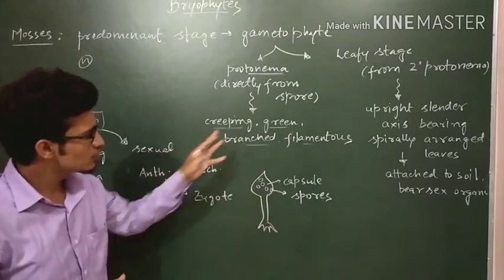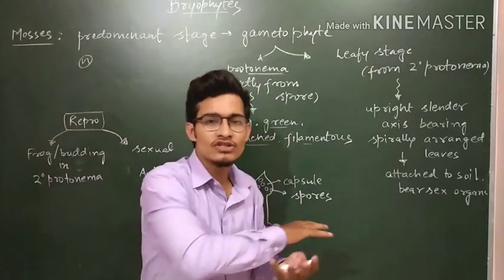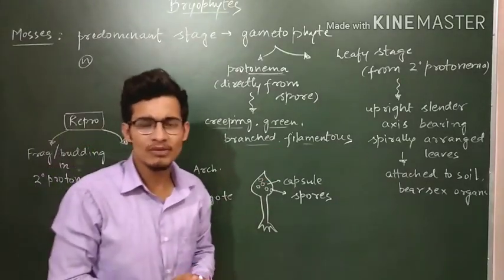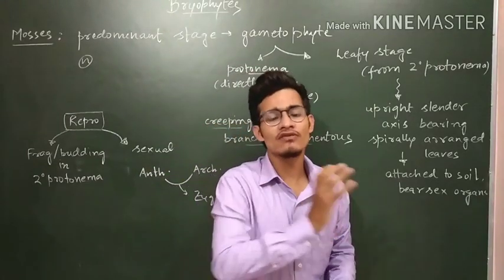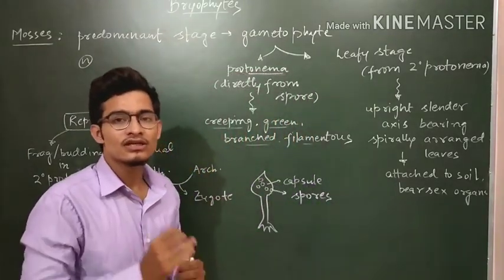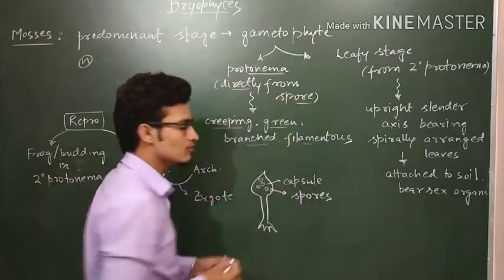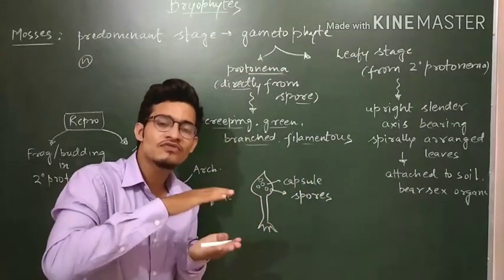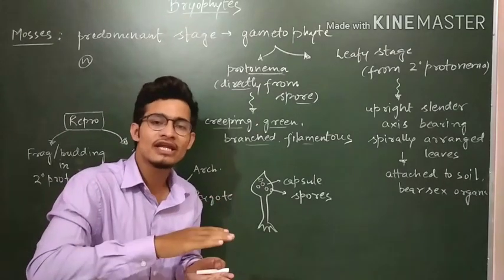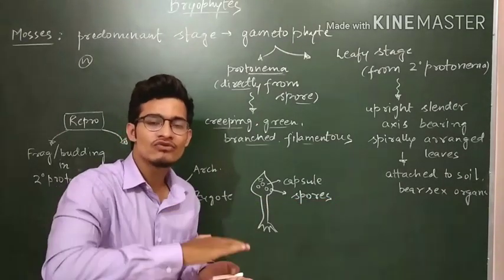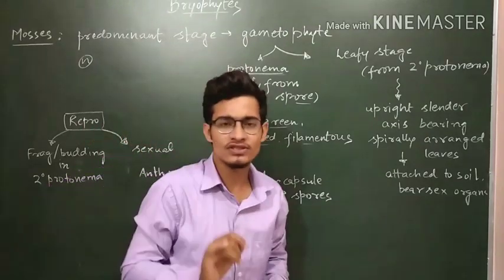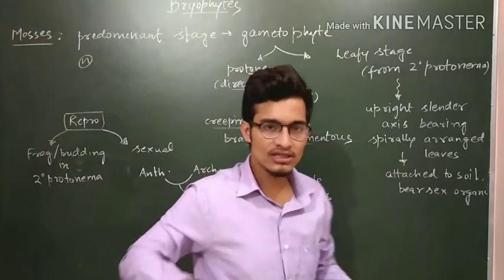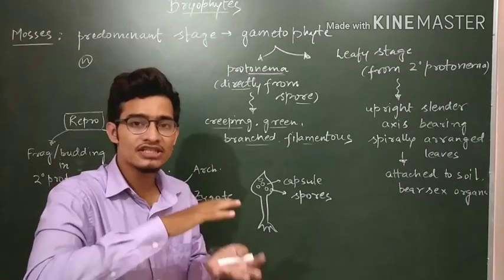The leafy stage is the second one. Here there is a creeping structure spread on the ground, green in color, mostly branched and filamentous. The special feature of this particular stage is that it develops directly from the spore. When the spore germinates it gives rise to this smaller unit - the first stage - which is green, creeping, and branched or filamentous. This first stage is known as protonema.